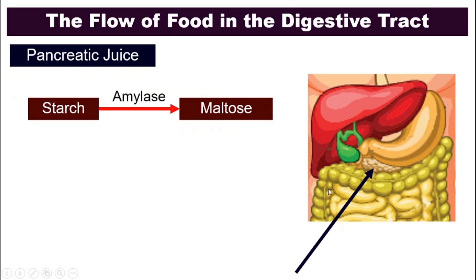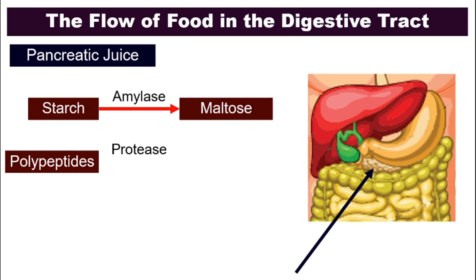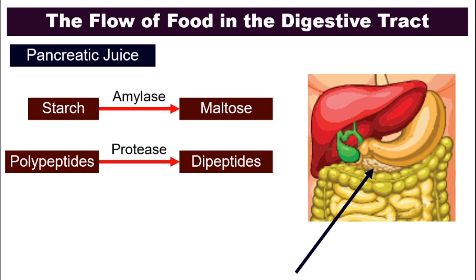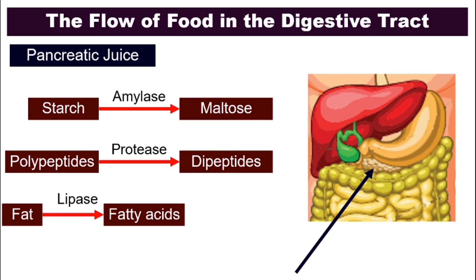So right now the food is in the duodenum. The liver contributes bile through the gallbladder, and the pancreas contributes pancreatic juice. Protease will continue to digest polypeptides — which were formed in the stomach — and turn them into dipeptides. The new enzyme lipase will digest fat and turn it into fatty acids and glycerol.